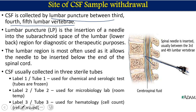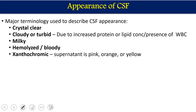CSF is usually collected into three different sterile tubes depending on purpose: tube one for chemical and serological tests (can be frozen), tube two for microbiological labs (kept at room temperature), and tube three for hematology or cell counts (can be refrigerated). Normal CSF appearance is crystal clear, but it can become cloudy or turbid due to high amounts of protein, lipid, or white blood cells. It can appear milky due to the presence of pus.